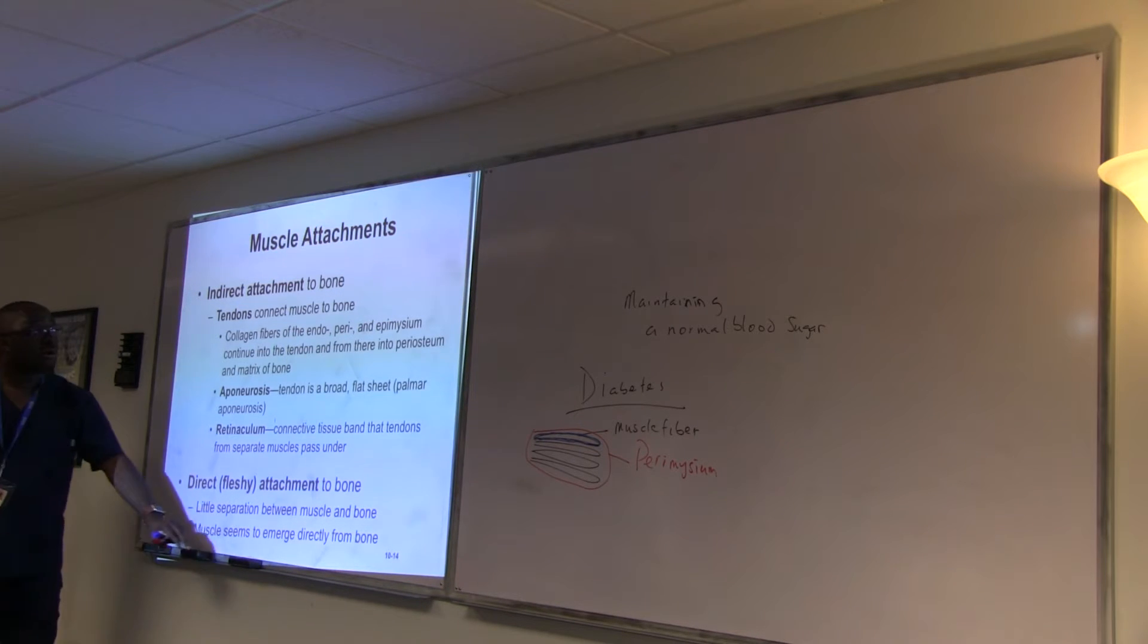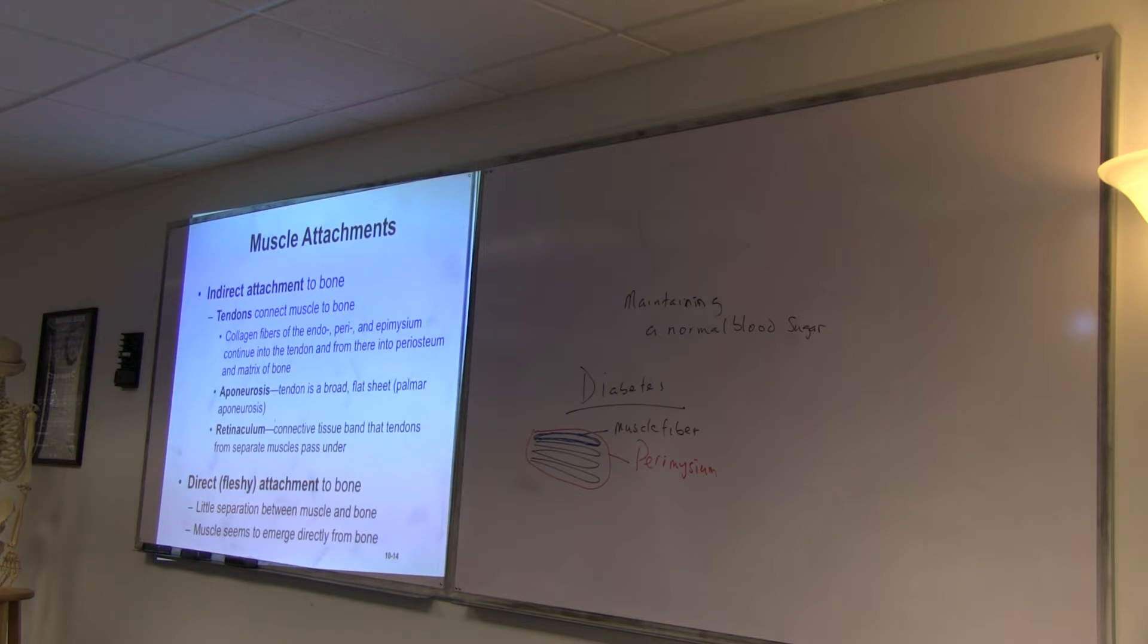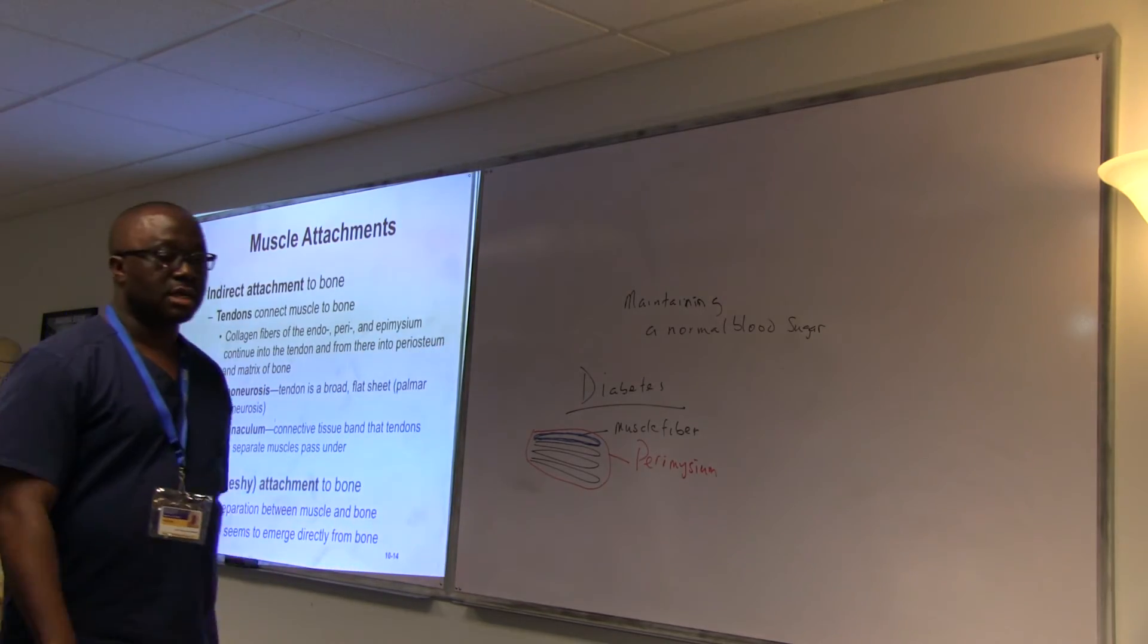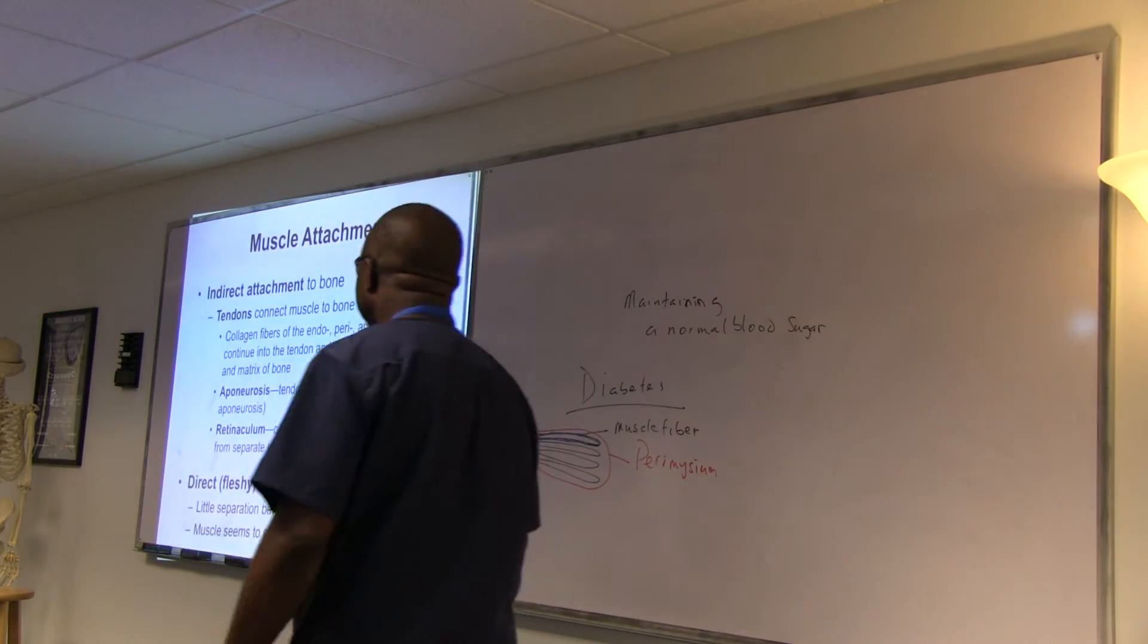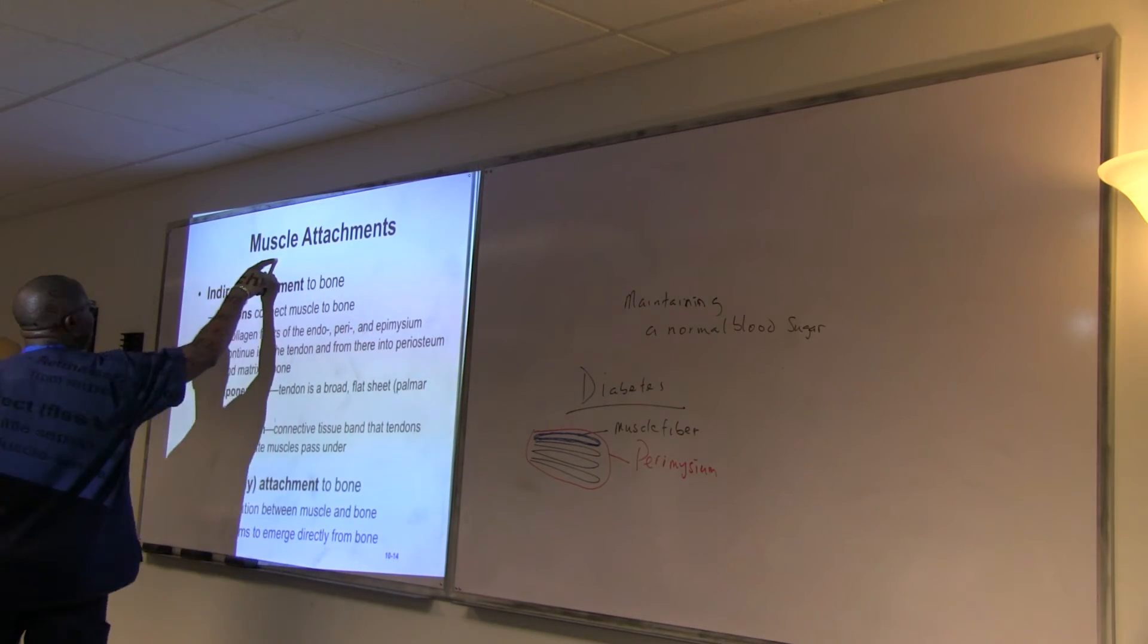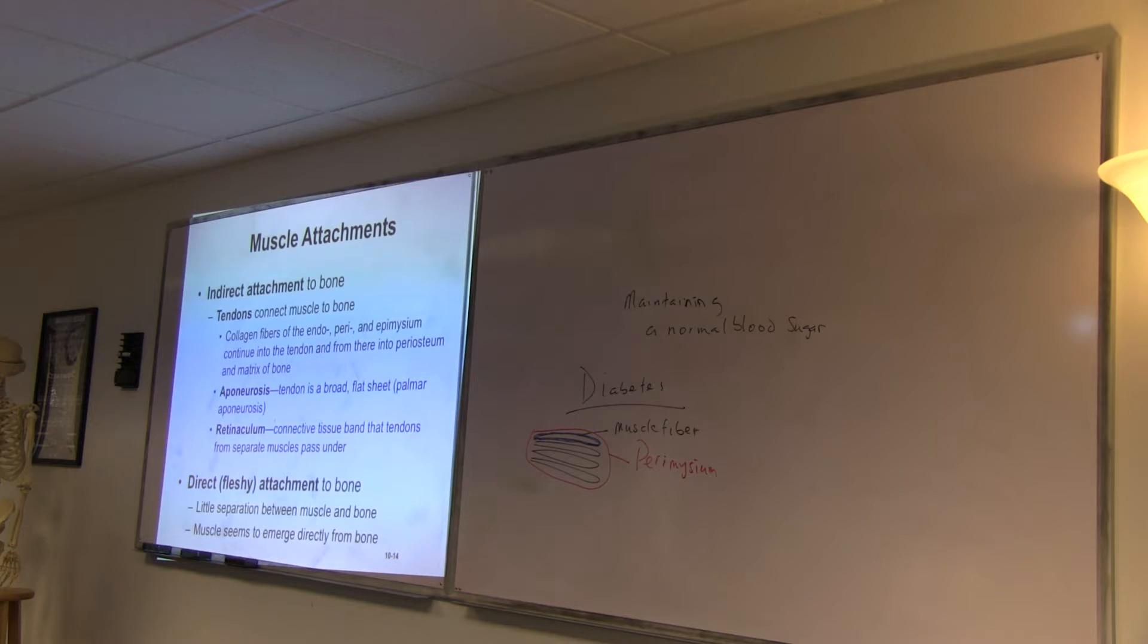Alright. So very important. So there are ways that muscles are attached to the bone. Remember that muscles are attached to the bone primarily. We're going to see later on that sometimes muscles get attached to themselves, or muscles are attached to the subcutaneous. It's not 100% that all muscles are attached to the bone. But when they get attached to the bone, that is the way that they are attached.